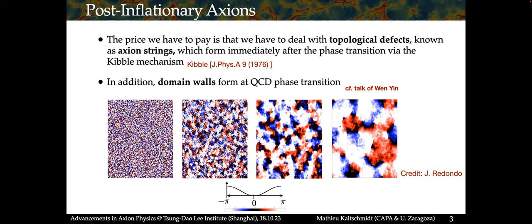There is a price we pay to work in the post-inflationary scenario: we have to deal with topological defects, especially axion strings that are very complicated to deal with for many different reasons. We are doing numerical simulations of these string networks in order to make these predictions. We also have domain walls, which are a later stage of the evolution. In our simulations we see the field values of the axion randomly distributed between minus pi and pi, and we see quite naturally the Kibble mechanism formation of these strings.